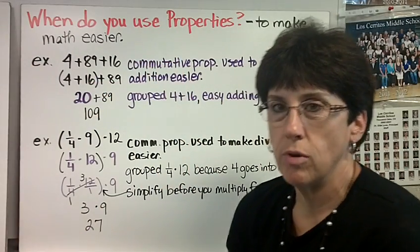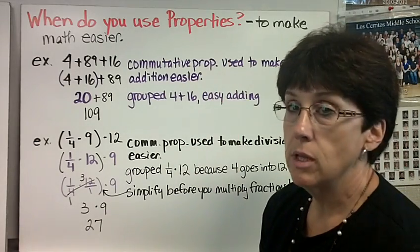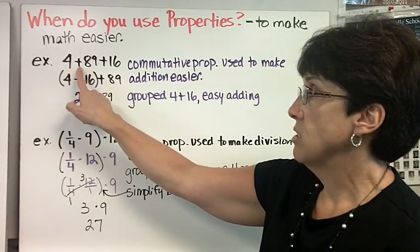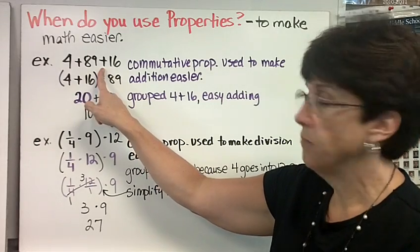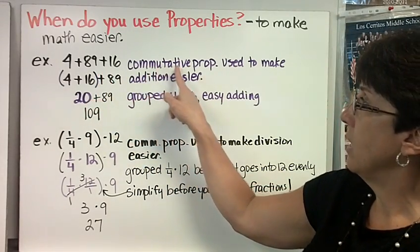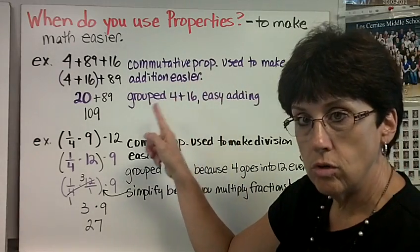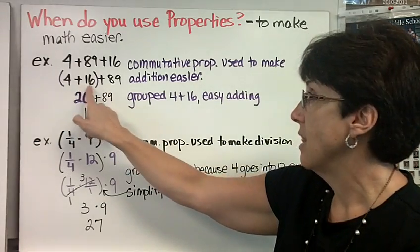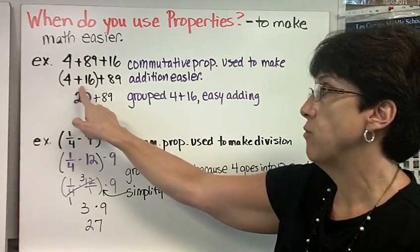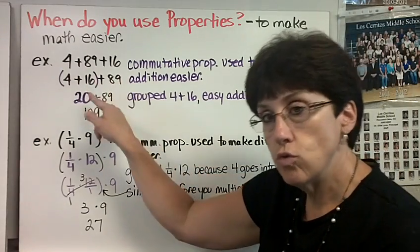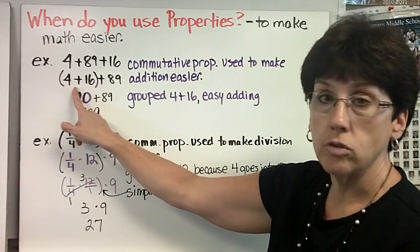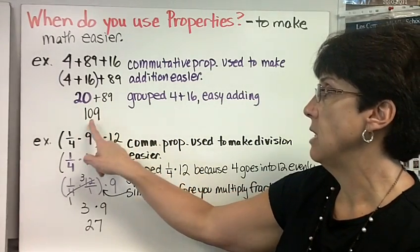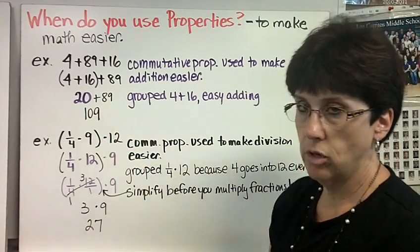When do you use the properties? Why do you even have to know about them? You actually use them all the time, you're not even realizing it. You use it to make math easier. If I gave you this problem, 4 plus 89 plus 16, I look at it and say I can use the commutative property to change the order to make my addition easier. I'm going to bring the 16 over with the 4, because 4 plus 16, that's a nice number. So now my problem is 4 plus 16 plus 89. And I'm going to group those together using the associative property so I know what to do first. 4 plus 16 is 20. See, I grouped them so they're easier to do. 20 plus 89, 109.